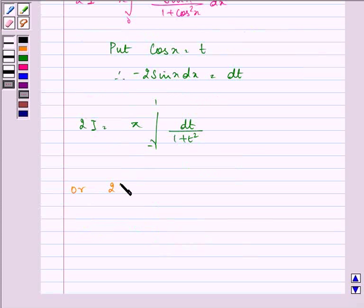So we have 2I equals π times [tan⁻¹(t)] from -1 to 1. Applying the limits, we have π times [tan⁻¹(1) - tan⁻¹(-1)] equals π times [π/4 - (-π/4)].